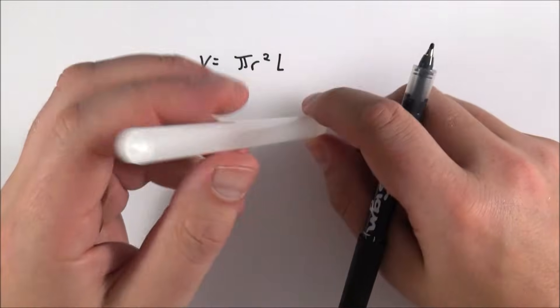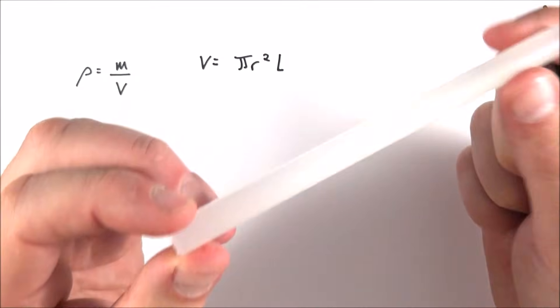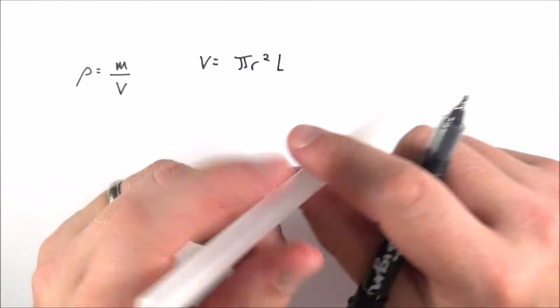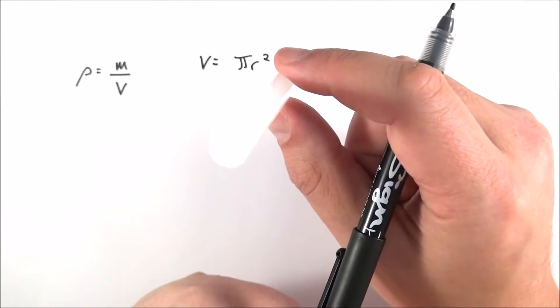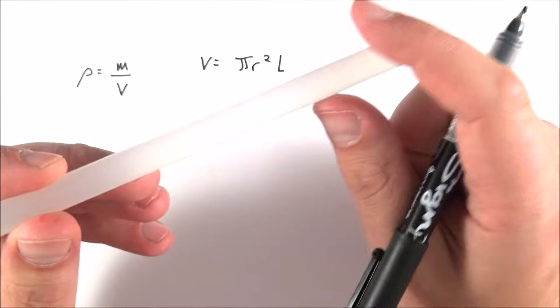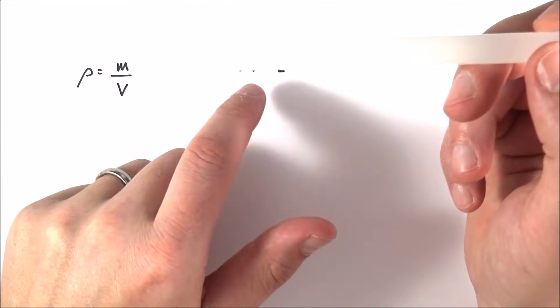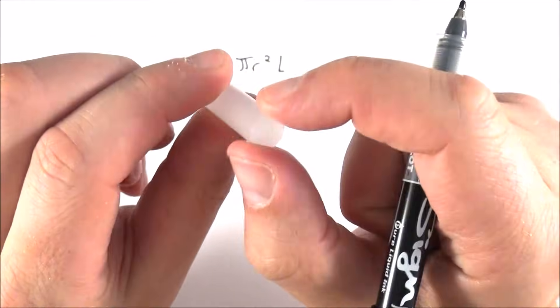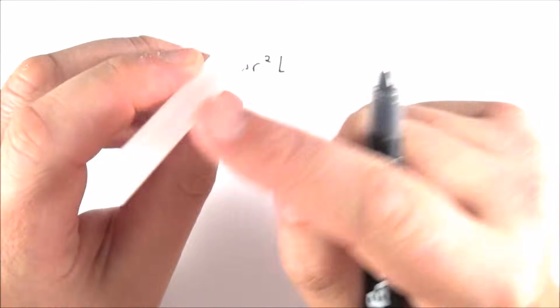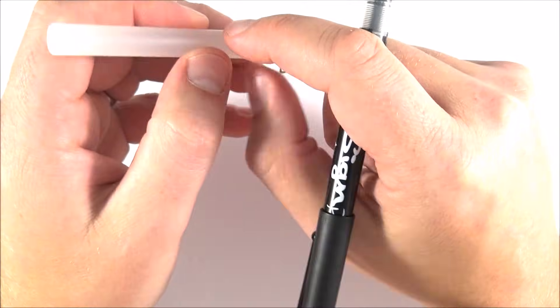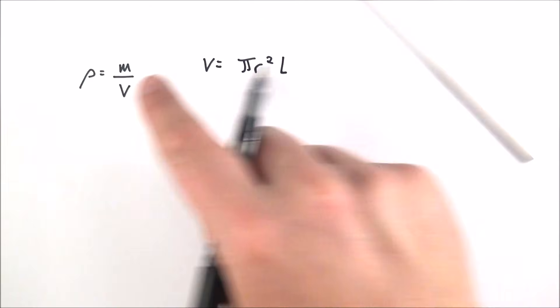I have an object here, a plastic stirring rod with a nice cylindrical shape and uniform density. What I'd like to do is work out the density by recording its mass using a mass balance and then working out its volume by measuring the diameter using an appropriate device and measuring the length using a ruler.